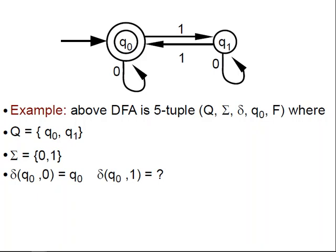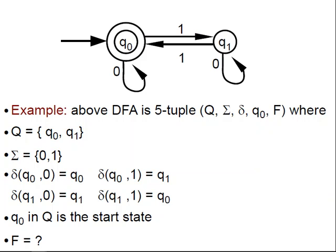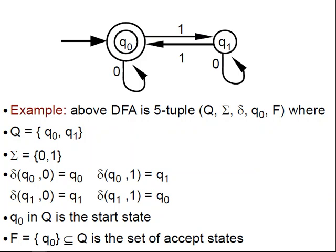What about δ(q0, 1)? Again, when you see a question mark, you can pause and think about it. That's where learning happens. δ(q0, 1) is q1, and so on and so forth for the others. q0 in Q is the start state, and what is F? F is the set that contains just q0. We define F to be a set, so in this case F is a singleton set of q0.